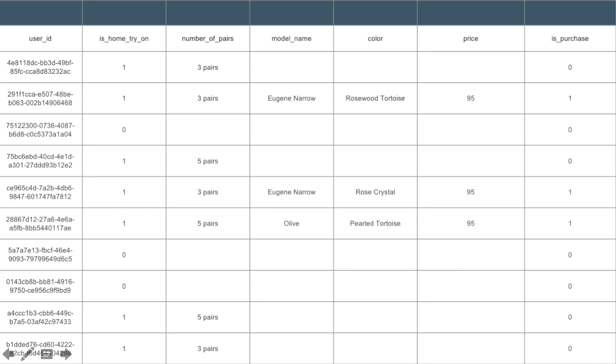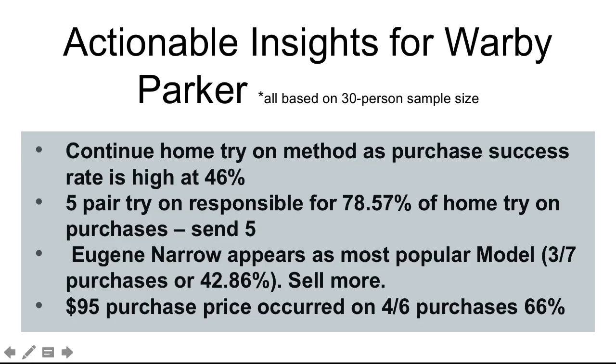So we'll wrap things up with our actionable insights that we have for Warby Parker. I think we should continue the home try-on method. This purchase success rate is high. Eugene Narrow is one of the more popular models. When I close it out to a 30 person sample size, three out of the seven purchases were Eugene Narrow.